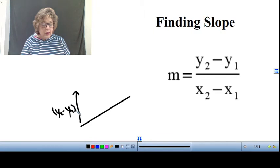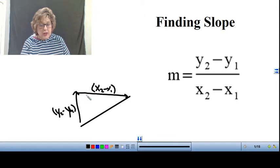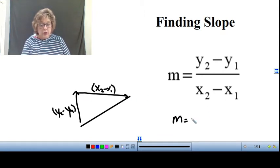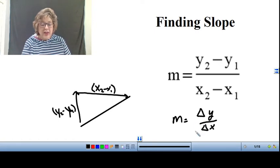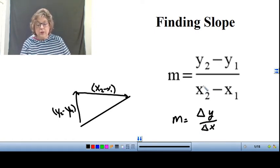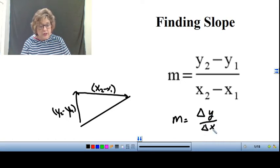And then we're going to count how much it goes over, that would be the difference in your x values, x2 minus x1. So when we're looking at slope, we're looking at the change in the y's over the change in the x's. Some people call slope the difference in the y's over the difference in the x's. And that triangle means delta, which just refers to the difference. So you may see your formula like this, or you may see it like this.